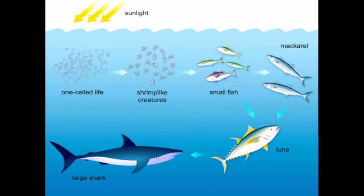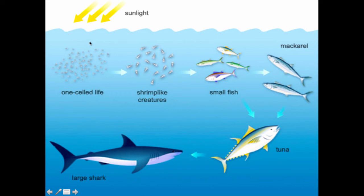Here is a food chain for marine. We have one-celled life, which we call photosynthetic plankton, or it could be algae — pretty much it's algae if we're in the ocean. Algae is consumed by krill, which are shrimp-like creatures. Krill is eaten by small fish, which then can be eaten by mackerel, then tuna, and then to a shark. So we have our producer, primary consumer, secondary consumer, tertiary consumer, fourth level consumer, and then our top predator, which is the shark.